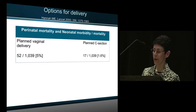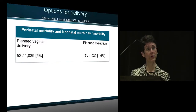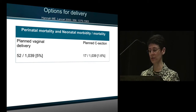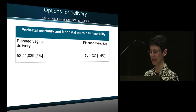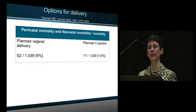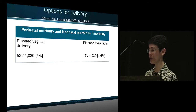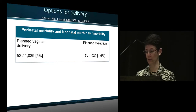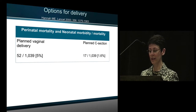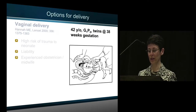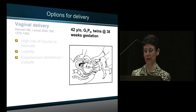The options for delivery of a fetus in the breech position are either vaginal or C-section. In the year 2000, Hanna conducted the Term Breech Trial, where perinatal mortality and neonatal morbidity and mortality were significantly lower among the planned C-section delivery group at 1.6%, compared to the planned vaginal delivery group at 5%.